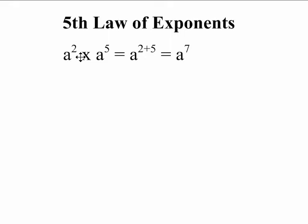When we multiply polynomials, we add the exponents. a squared times a to the 5 equals a to the 2 plus 5 equals a to the 7.